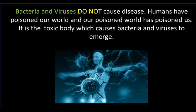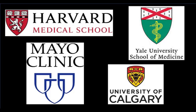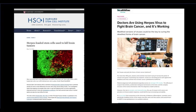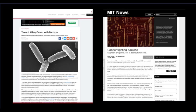Bacteria and viruses do not cause disease. Humans have poisoned our world and our poisoned world is poisoning us. It's the toxic body which causes bacteria and viruses to emerge. This has been proven in some of the best medical facilities around. The herpes virus was injected into brain tumors, shrinking and eliminating them without harming one healthy cell around the tumor. E. coli and salmonella were injected into cancerous tumors, shrinking and eliminating them without harming one healthy cell around the tumor.